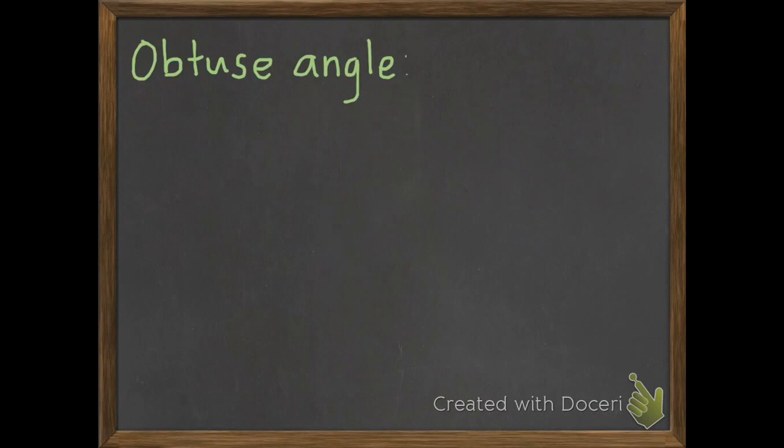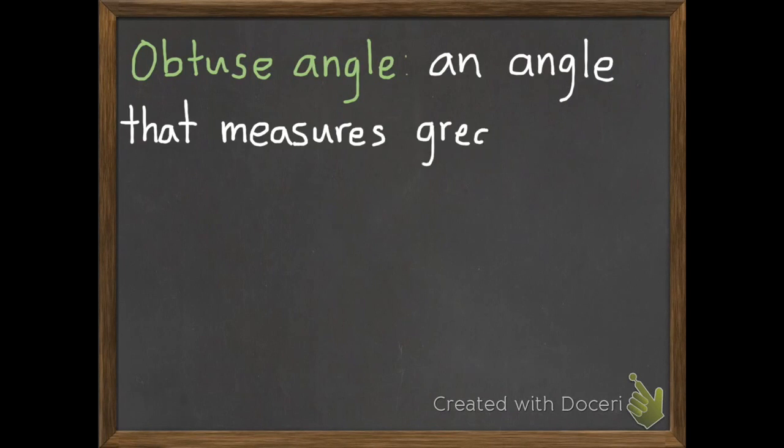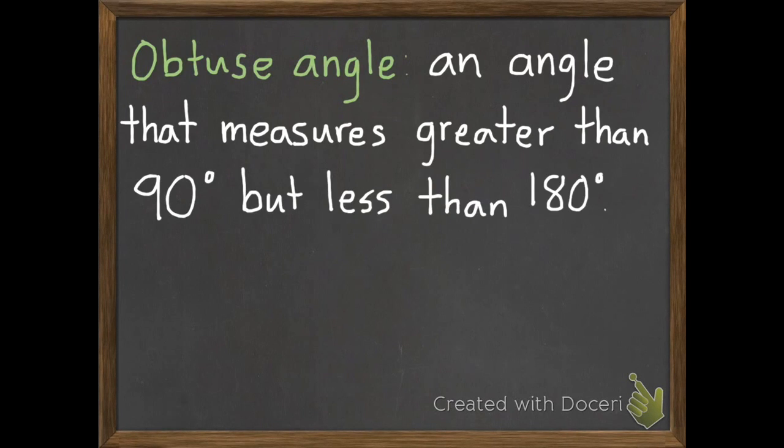Our last vocabulary word is obtuse angle. An obtuse angle is an angle that measures greater than 90 degrees but less than 180 degrees. So if we have these four parts, kind of like our circles yesterday, this would need to be greater than 90 which was a fourth of a turn but less than 180 which would be a half a turn.